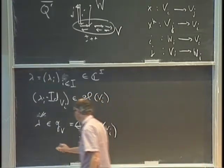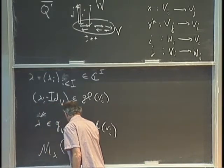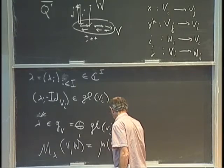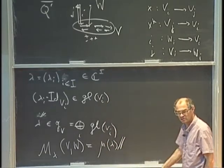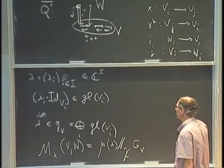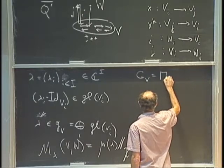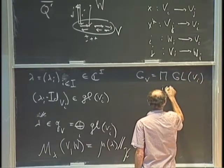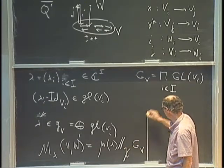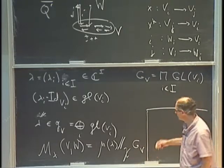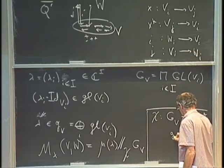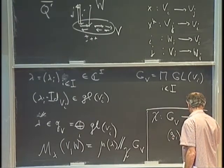Finally, the Nakajima variety M_lambda(V,W) is defined as: you take the fiber of the moment map mu over the point lambda, then take the double-slash quotient with respect to a stability condition chi, by the action of the group G sub V — which is the product of GLs. The stability condition chi is a homomorphism from G sub V to C star, which takes an I-tuple of invertible matrices and sends it to the product of their determinants.